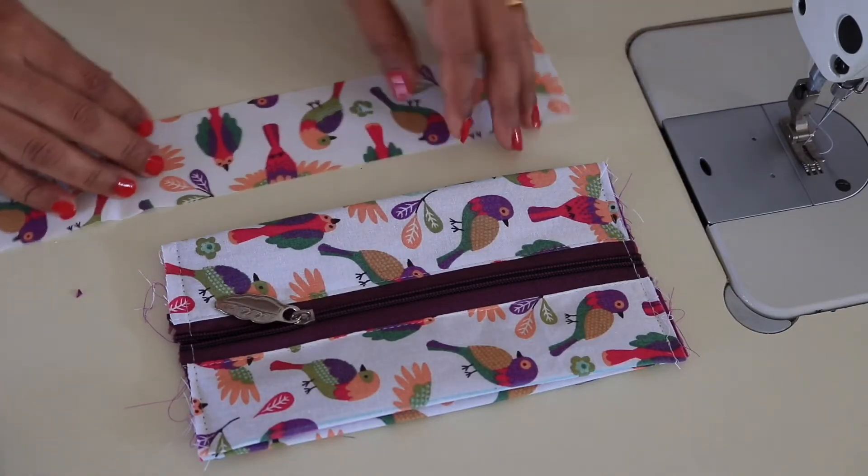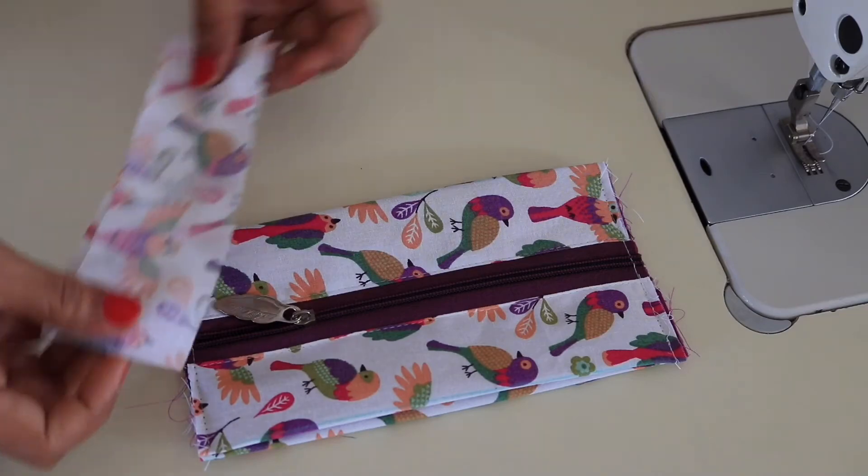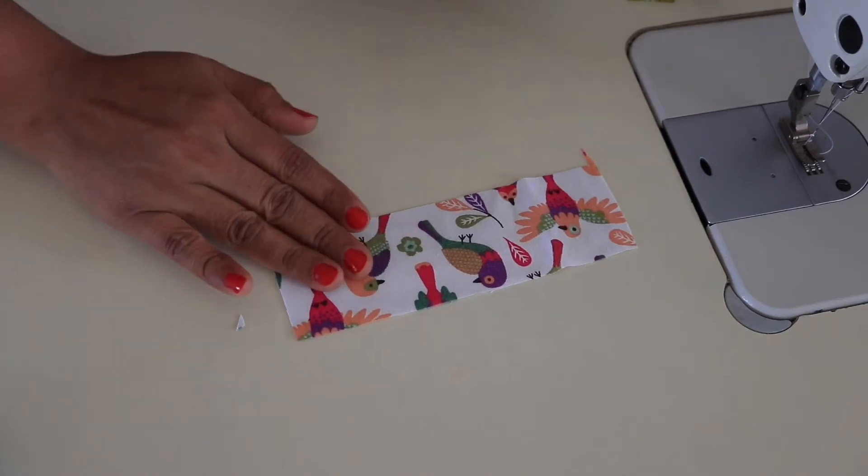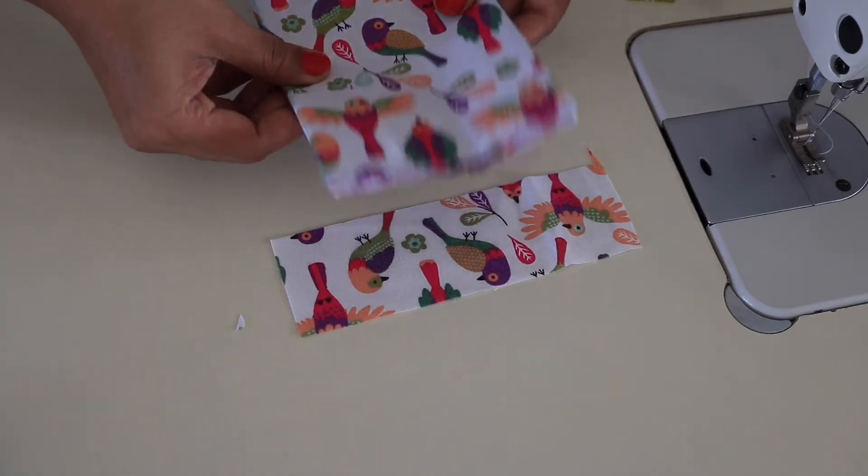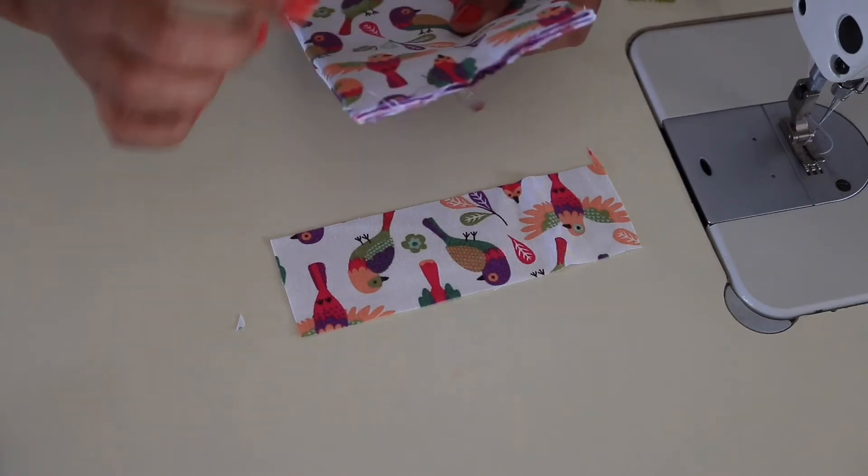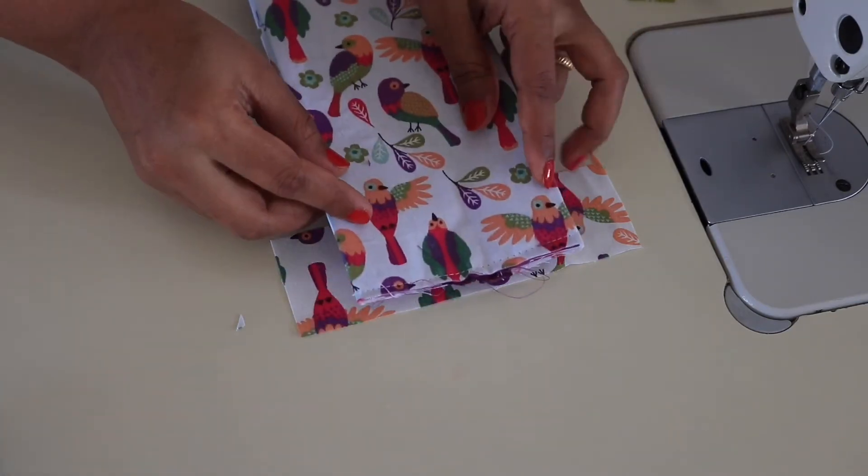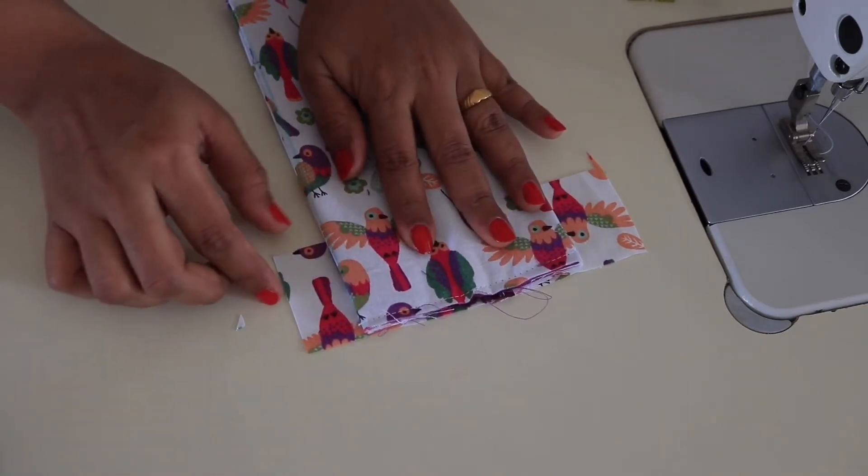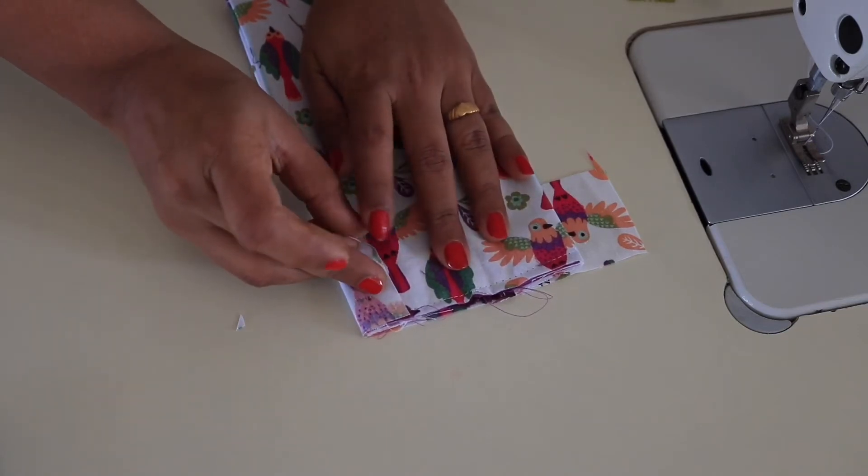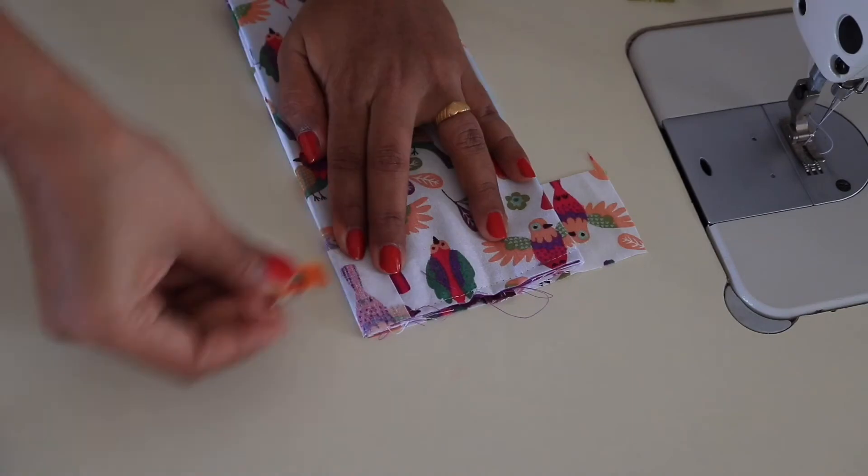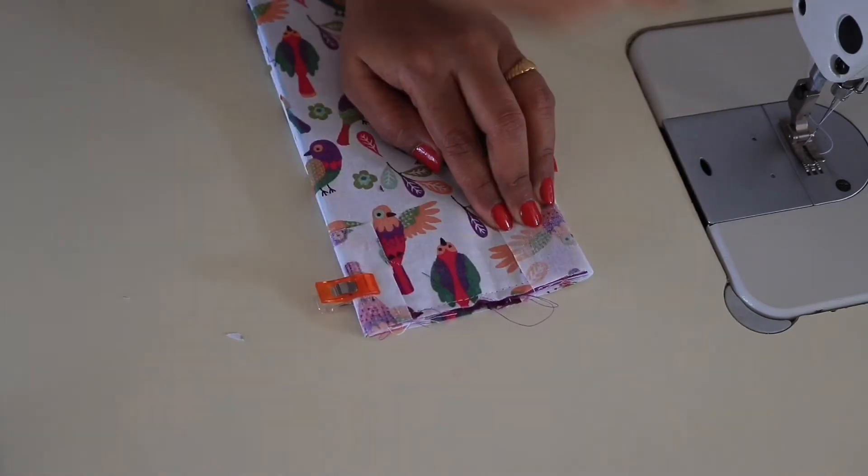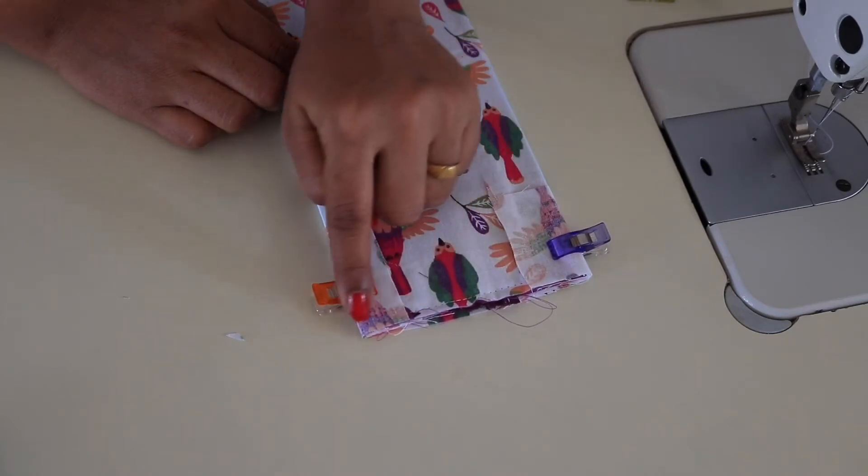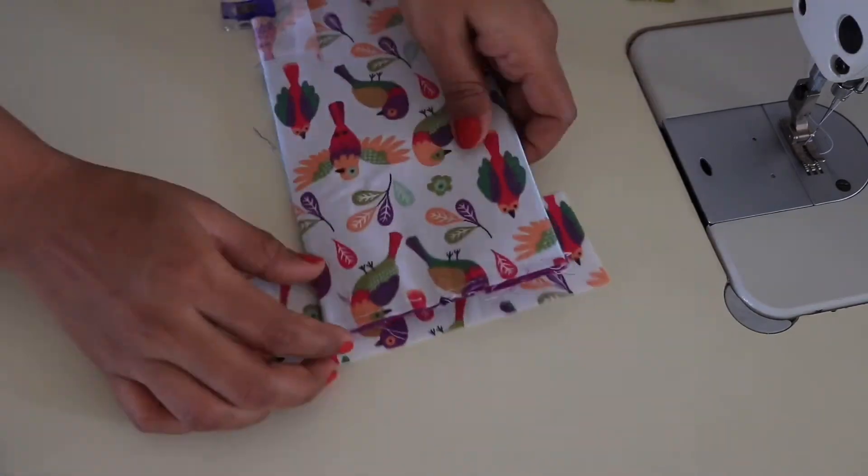Now lay your binding fabric with right side facing up, then place your zipper pouch with zipper facing down in the center, approximately in the center. Then wrap the binding around the sides and pin. Sew a quarter inch seam allowance on both the sides.